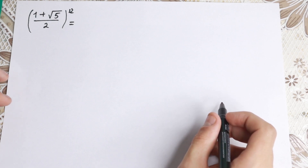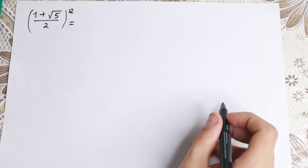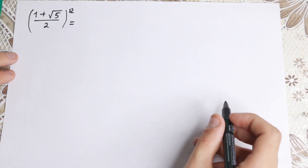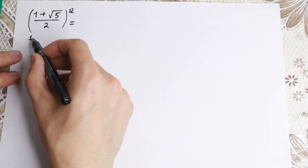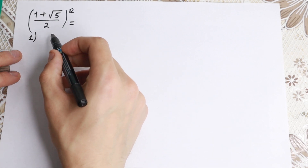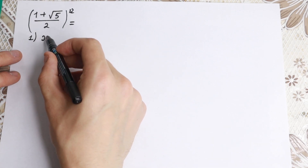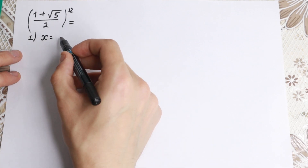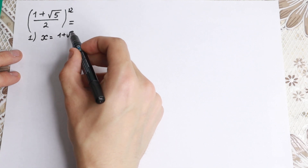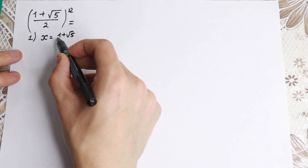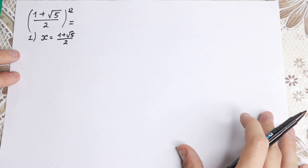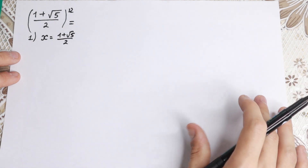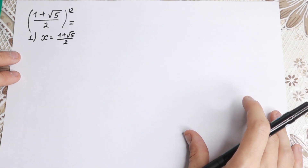How can we find this answer? I want to show you a really good three-step approach. First of all, let's write this element as our x. So x equals (1 plus square root of 5) over 2. So this is our x. Let's work with this.